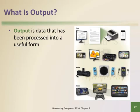Output may be the most significant stage of the information processing cycle. Output is the goal of input and processing and provides the information users need to work and make decisions. Output is data that has been processed into a useful form. The four basic categories of output are text, graphics, audio, and video.